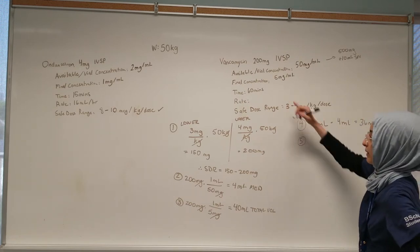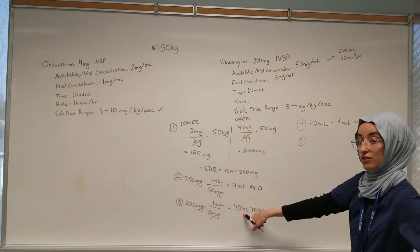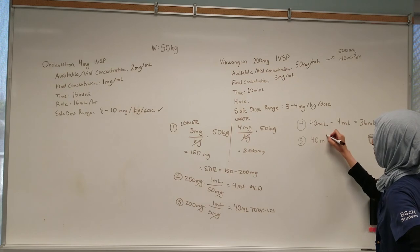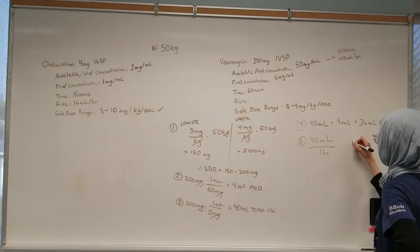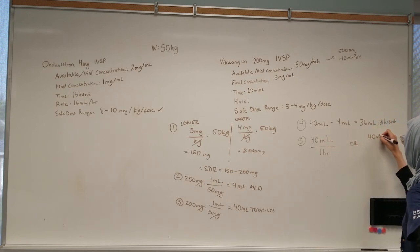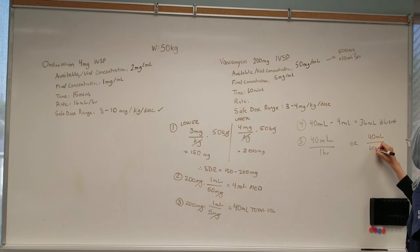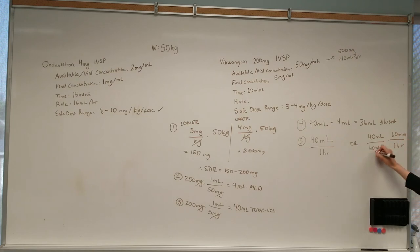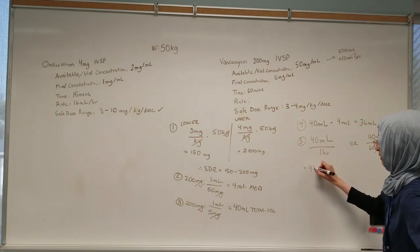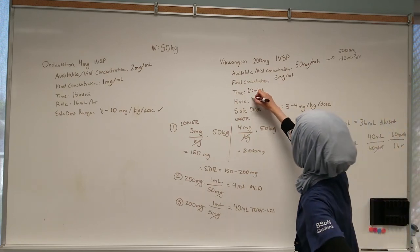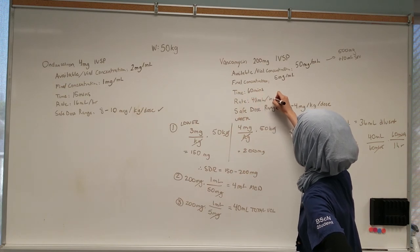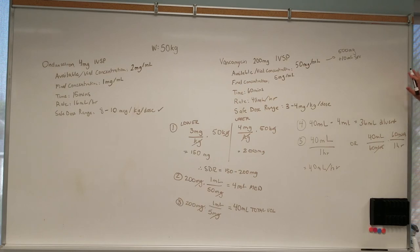Now we have all our numbers and can calculate our rate. We're giving a total of 40 mL of solution over 60 minutes, which is 1 hour. So our rate is 40 mL per hour. We make sure to record all these numbers because when we input them into the pump, we need them for reference, and it's also a double-check that our math is correct.